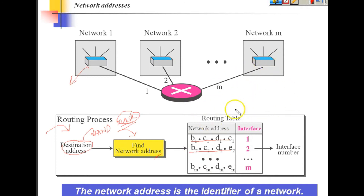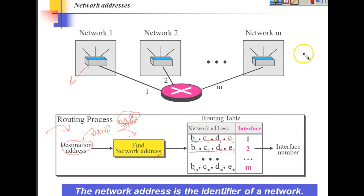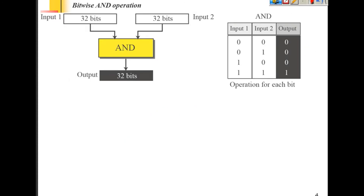That's why this mask is required — to find out the network address. Without the mask, the network address cannot be found. That is why the concept of mask is important in network addressing.